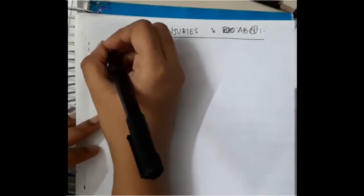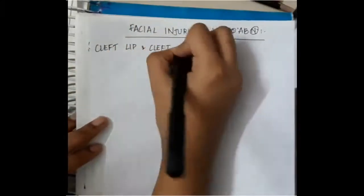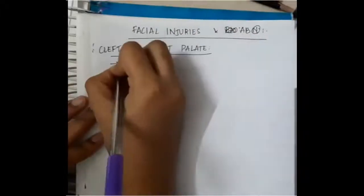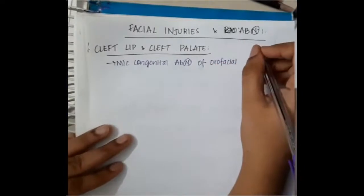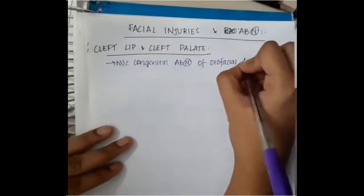Hello friends, let us now learn about the facial injuries and abnormalities in this chapter. In the first topic we will learn about cleft lip and cleft palate. Cleft lip is the most common congenital abnormality of orofacial structures.